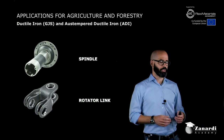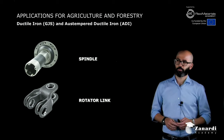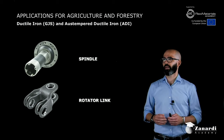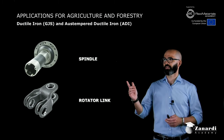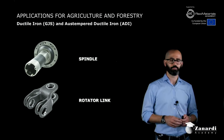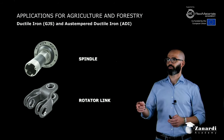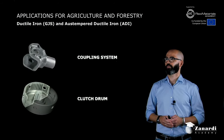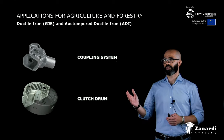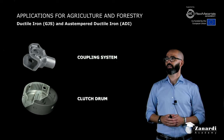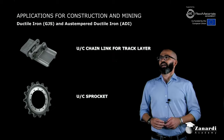In agriculture and forestry, just a few examples: the spindle for harvesting machines, the rotator link for forestry applications, and some locking driving systems and clutch drums for tractors.